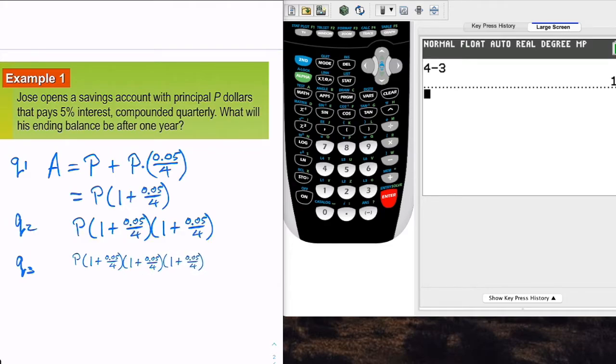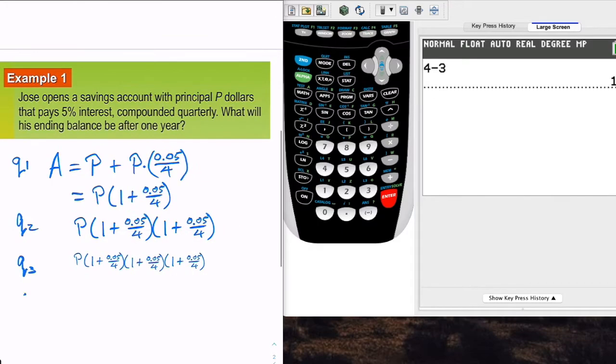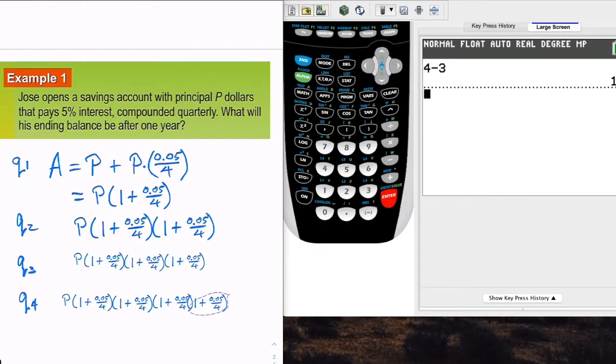Now, for Q3, this is the amount that we have. So to finish off the year, Q4, the fourth quarter, we're going to take this amount again, and we're going to multiply that by another calculation of interest. And so there that is.